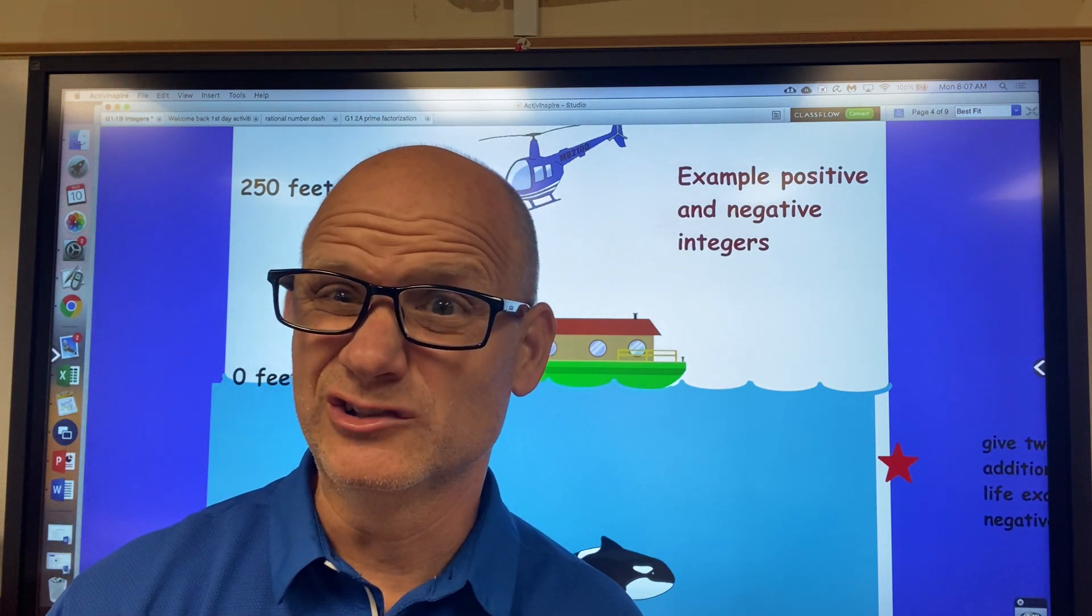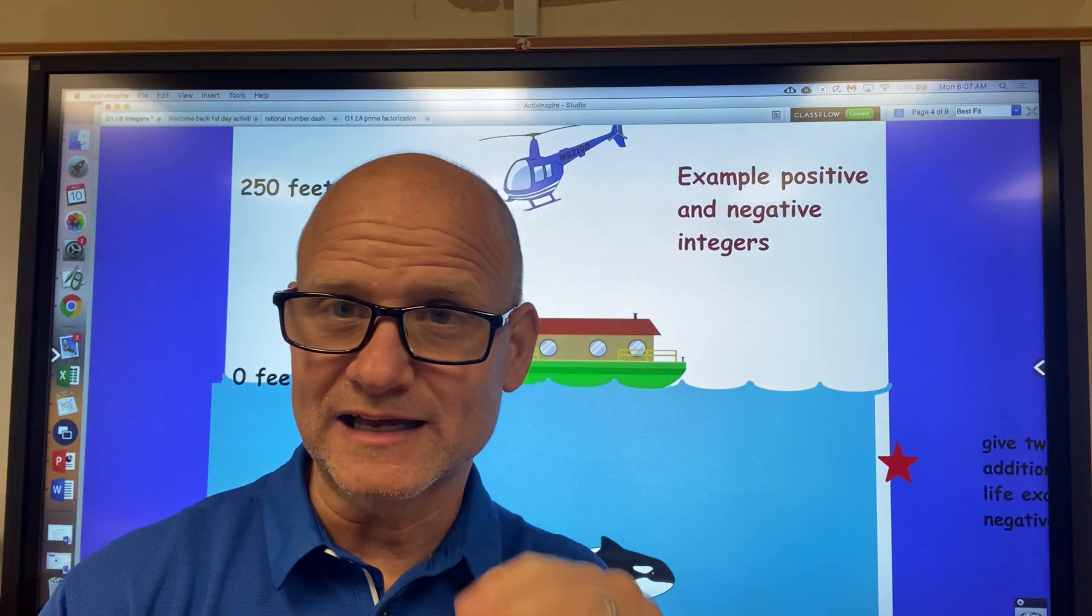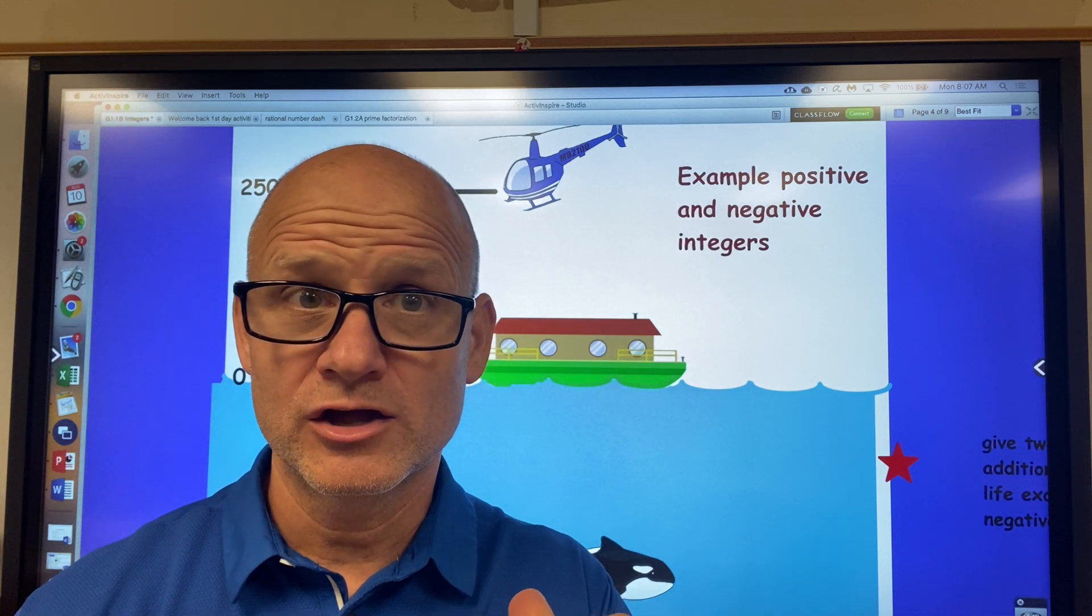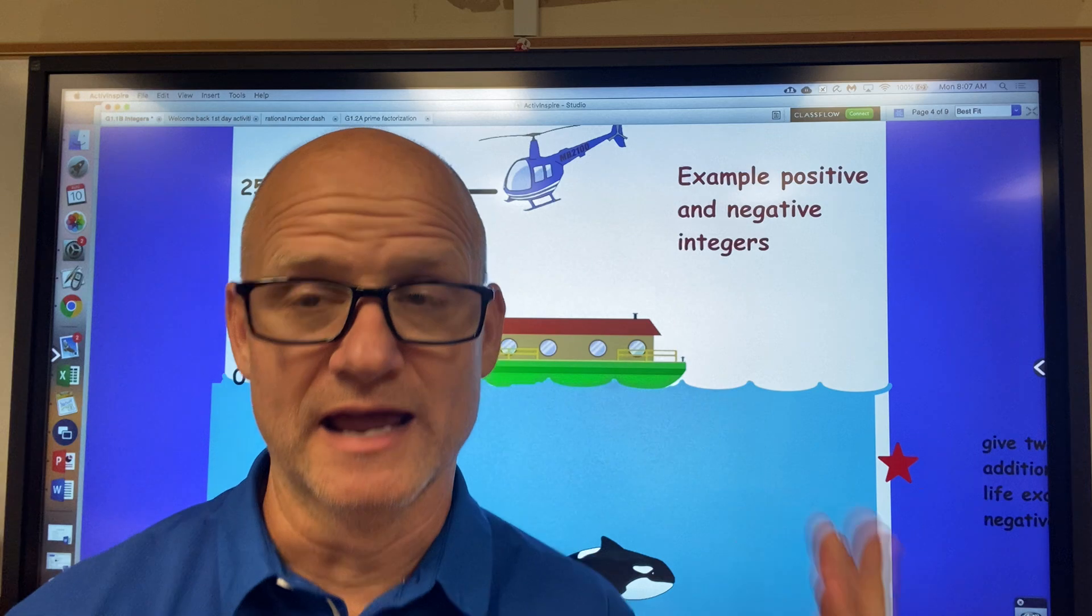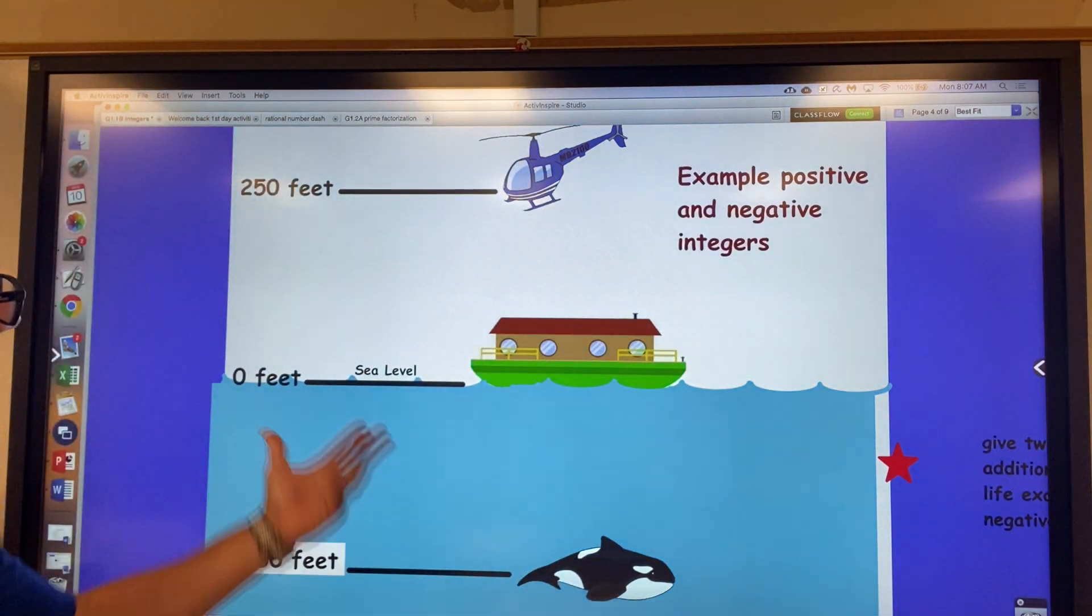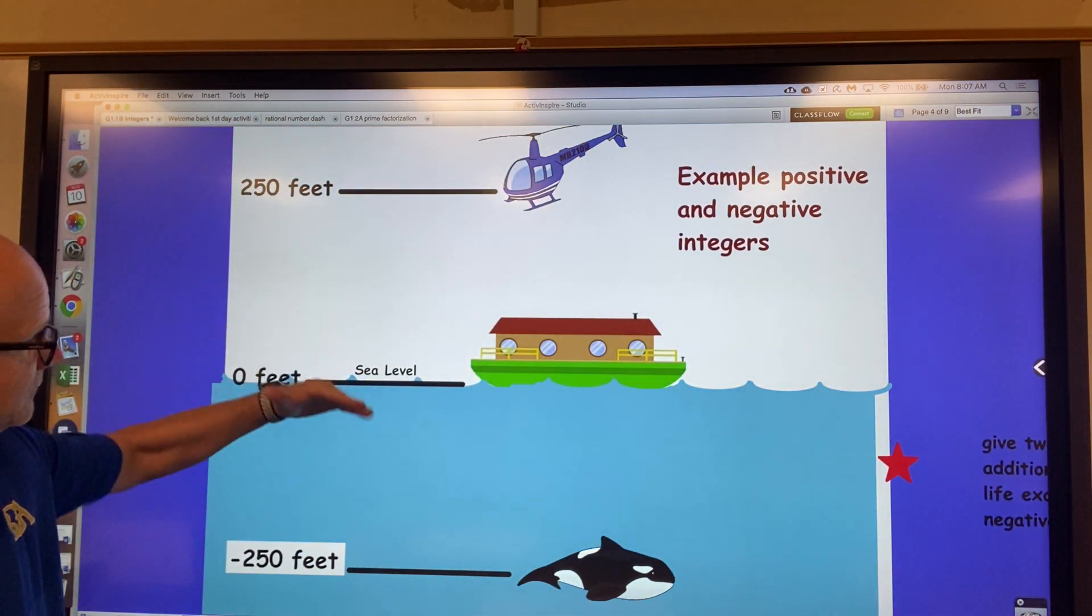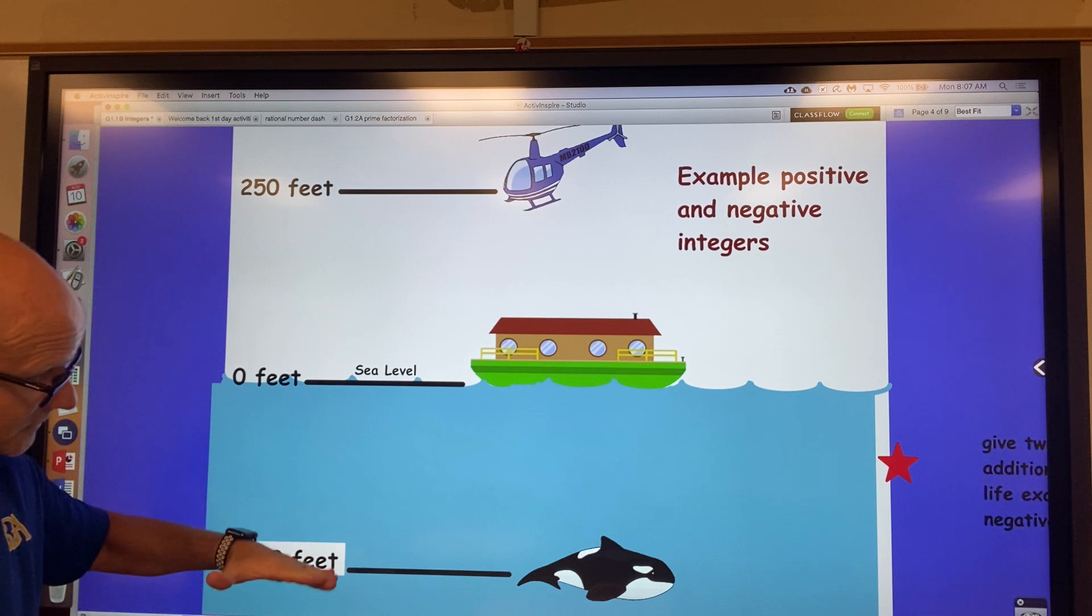So if you go to like New Orleans, I believe actually in New Orleans, the city is below sea level. Okay. So that would be like a negative integer. So this is an example. This is 200 feet above sea level and 200 feet below sea level.